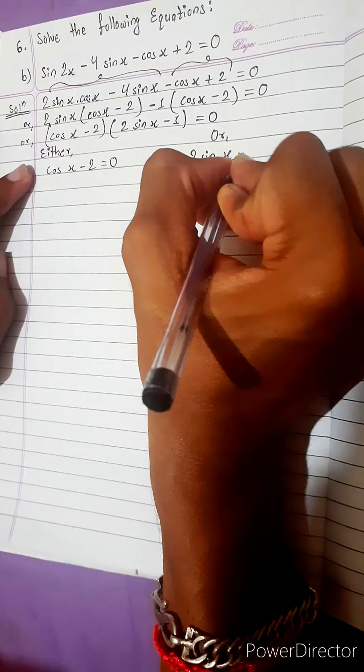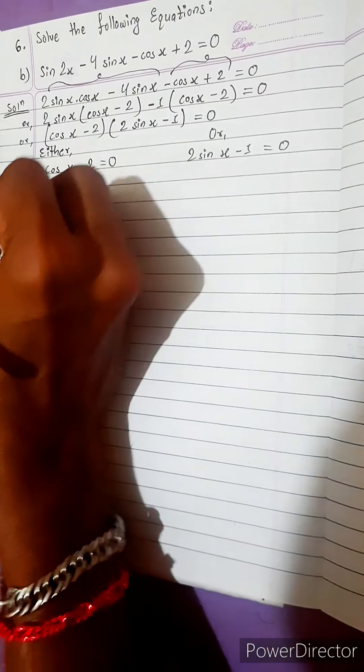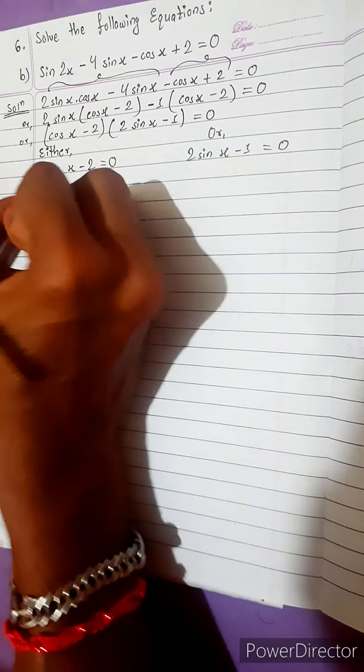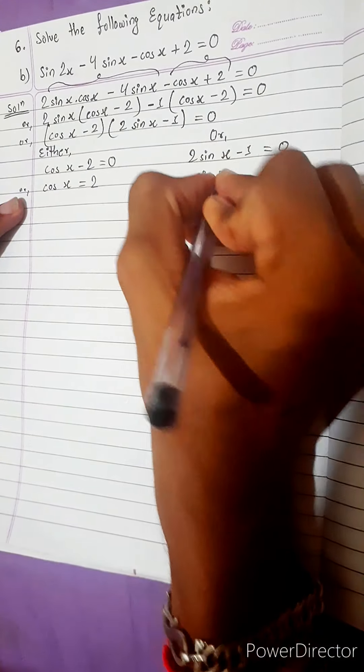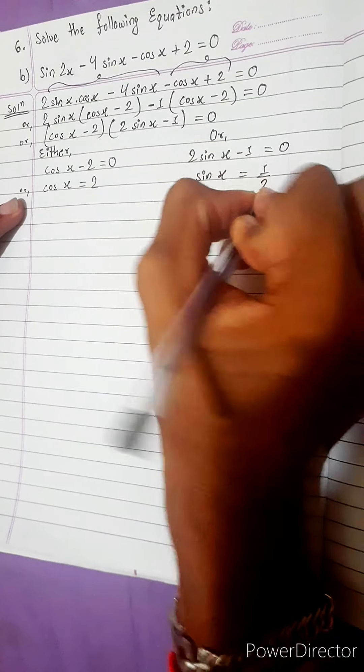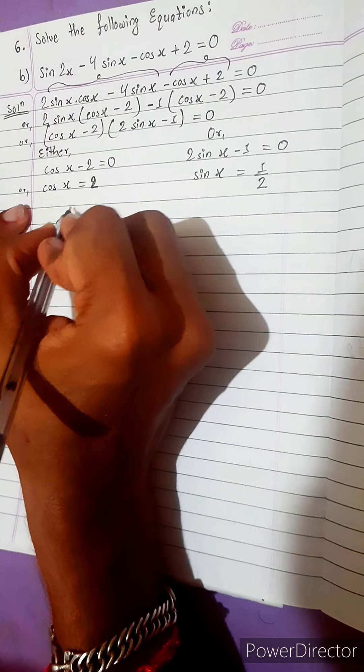Either cos x minus 2 equals to 0, or 2 sine x minus 1 equals to 0. Now 2 transfer to another side, cos x equals to 2. Here, sin x equals to 1 by 2.